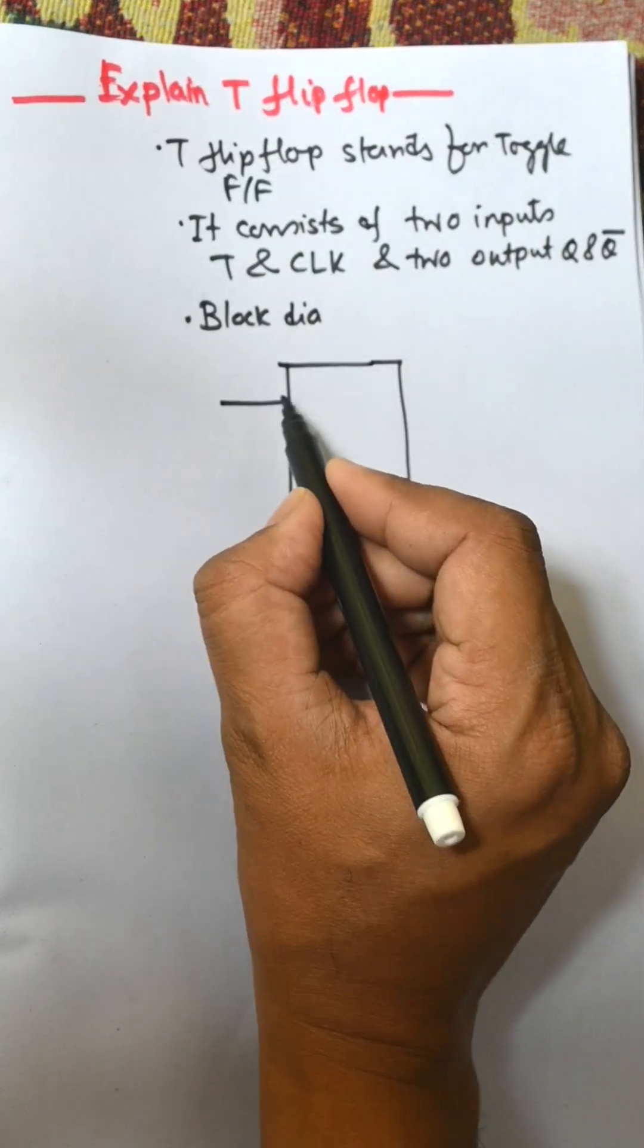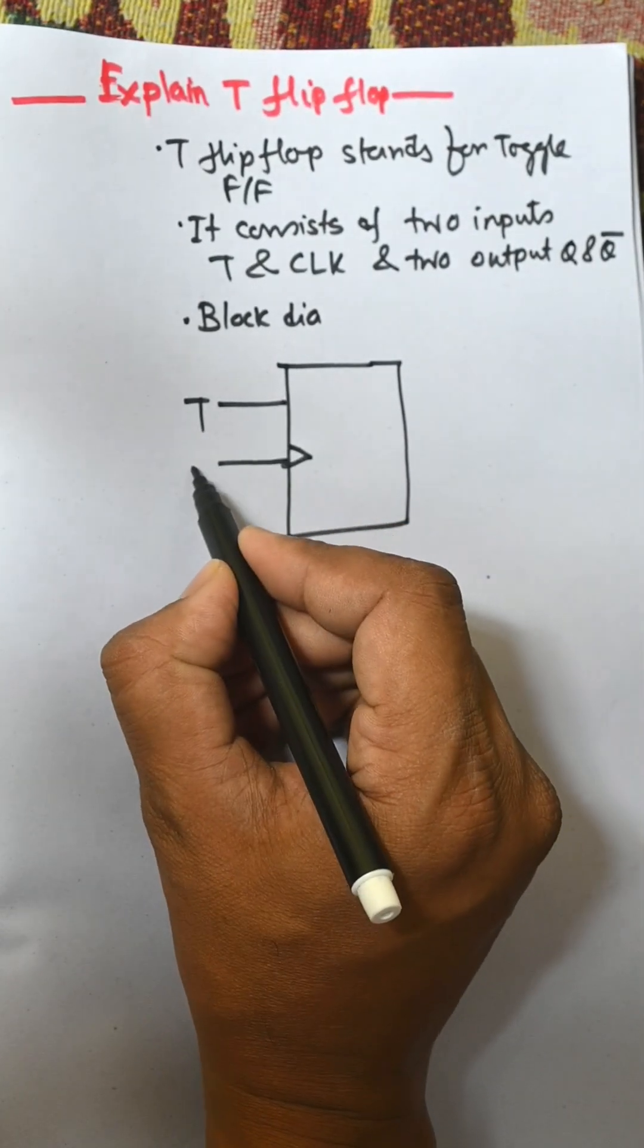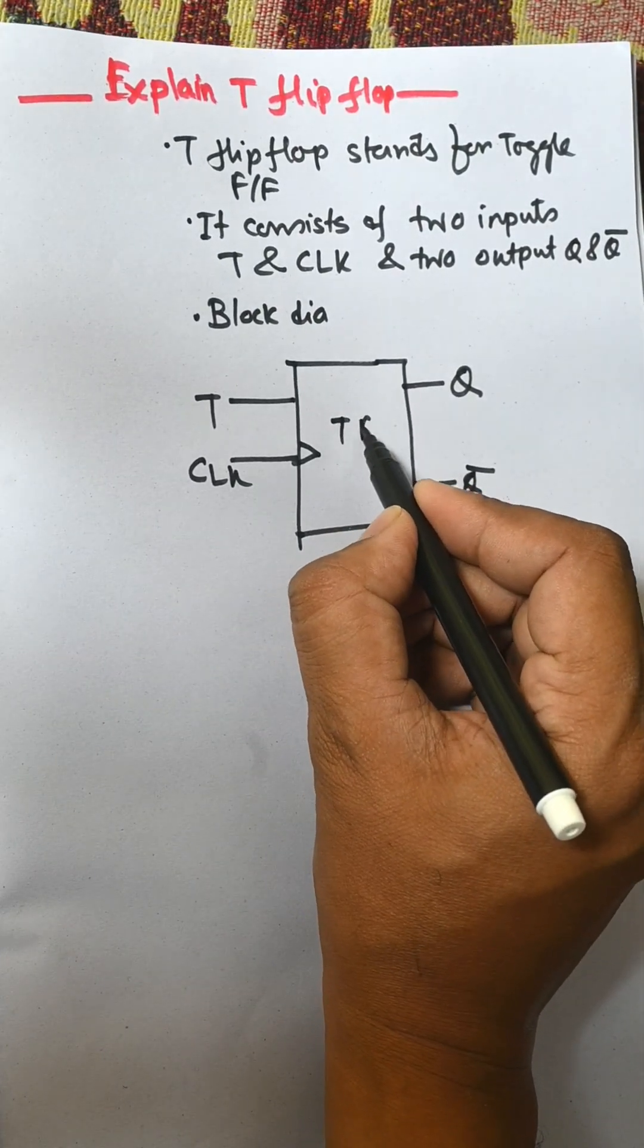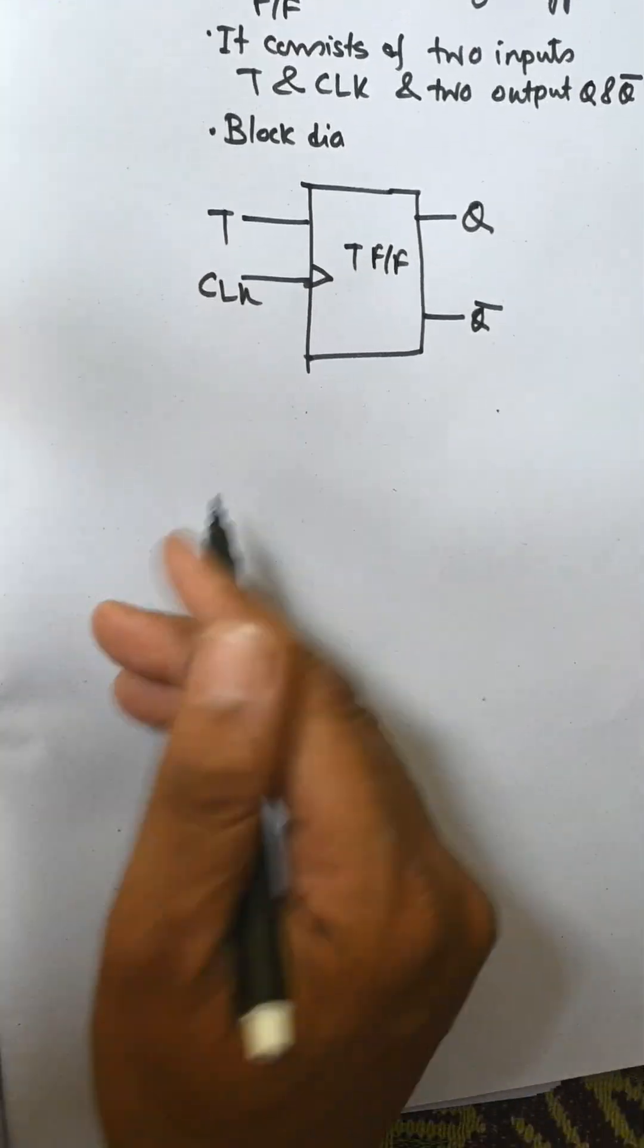Block diagram: this is T and this is CLK, and this one is Q and Q̄. This is T flip-flop, and now the circuit diagram.